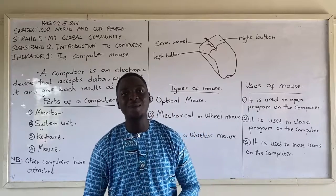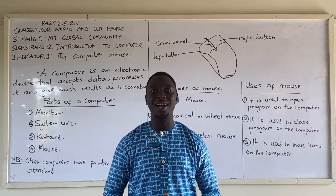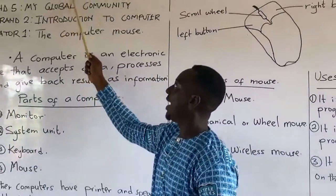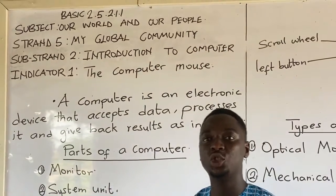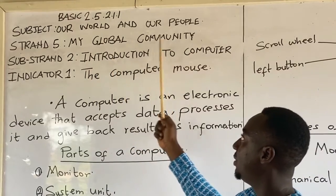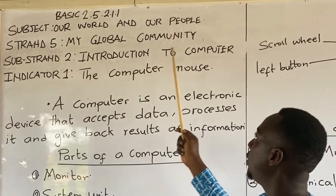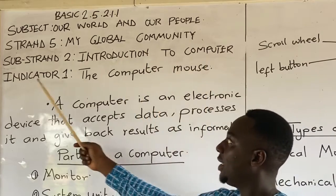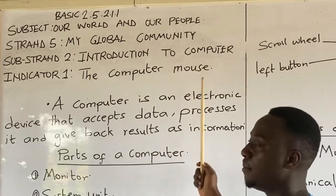Hello, welcome to Little Smiles International School Basic 2 Online Tutorial. Our subject for today is our world and our people. The strand is Strand 5, my global community. Strand 2, introduction to computer. Indicator 1, the computer mouse.